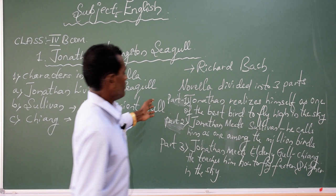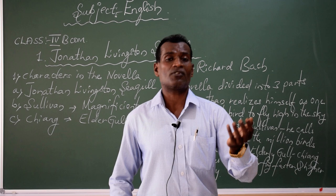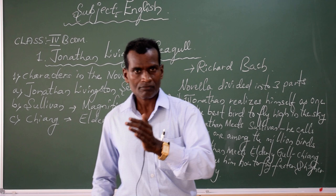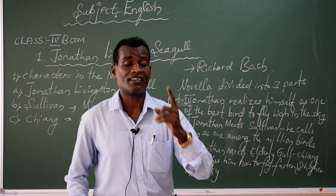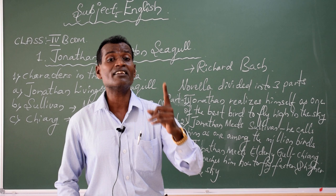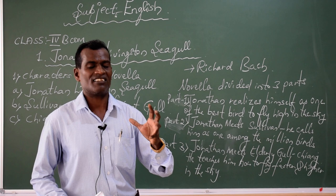In the second part of the novella, we come to know that when Jonathan meets Sullivan, Sullivan introduces Jonathan Livingstone and speaks about his extraordinary caliber — how quickly and fast he flies high in the sky, making it easy to catch prey. When Sullivan calls Jonathan Livingstone Seagull, he refers to him as one of the rarest species of birds — one among millions — because he has got the caliber, extraordinary power, physical strength, and stamina to achieve his goal.